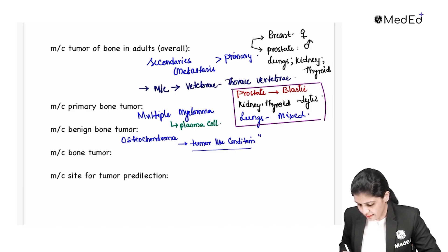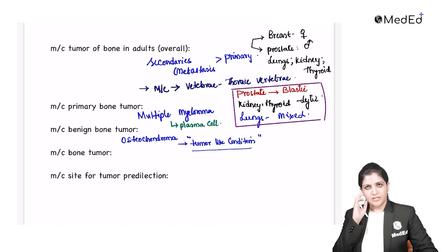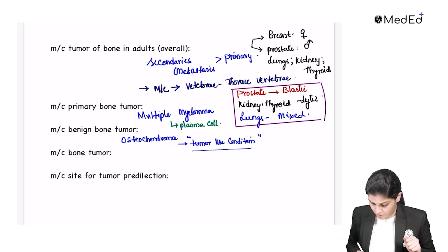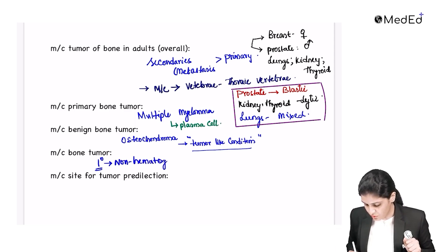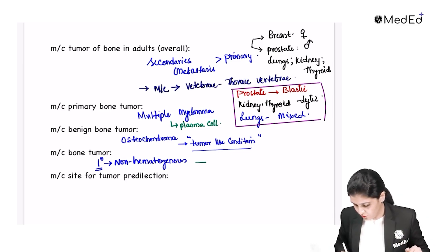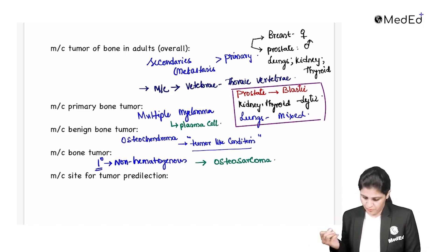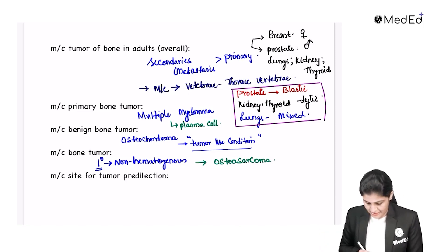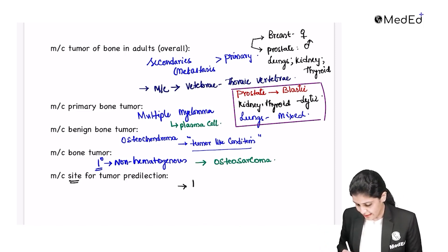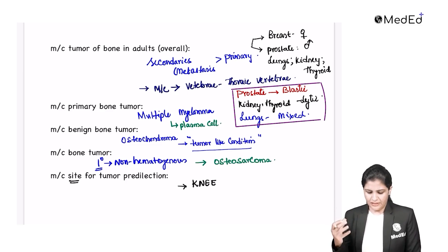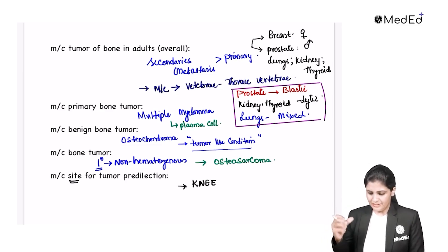Please remember that osteochondroma is a tumor-like condition but not entirely a tumor. If there is a catch in the question regarding tumor-like conditions, you have to be careful. The most common primary, non-hematogenous malignant bone tumor is osteosarcoma. The most common site where bone tumors are seen is the knee joint.